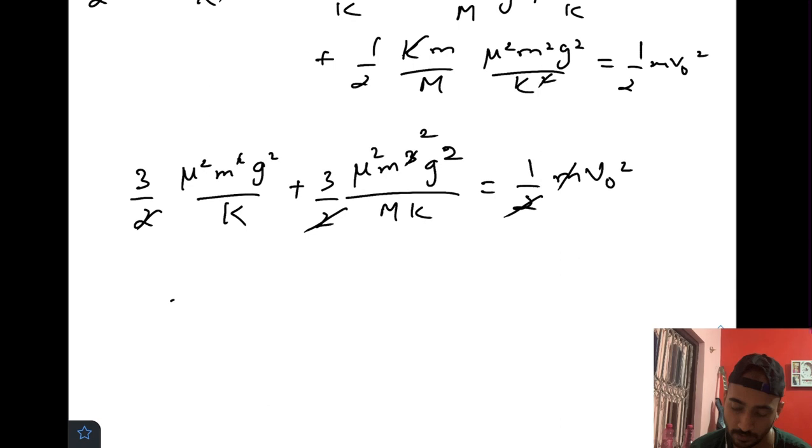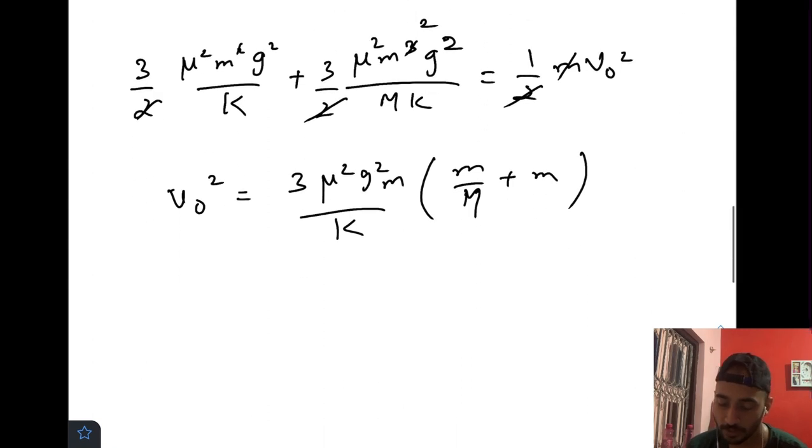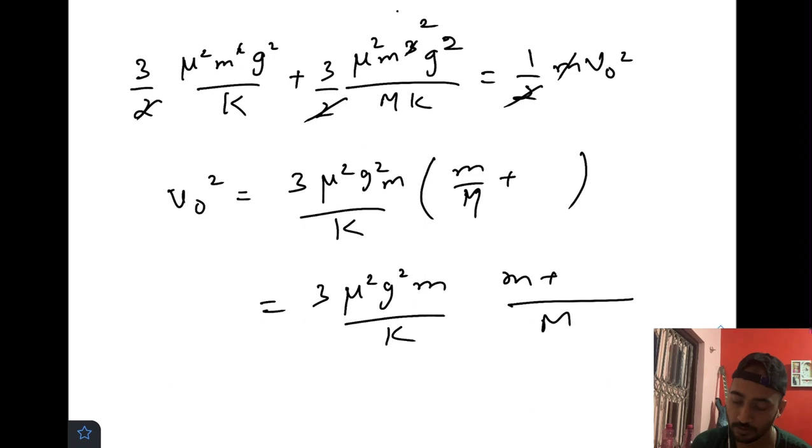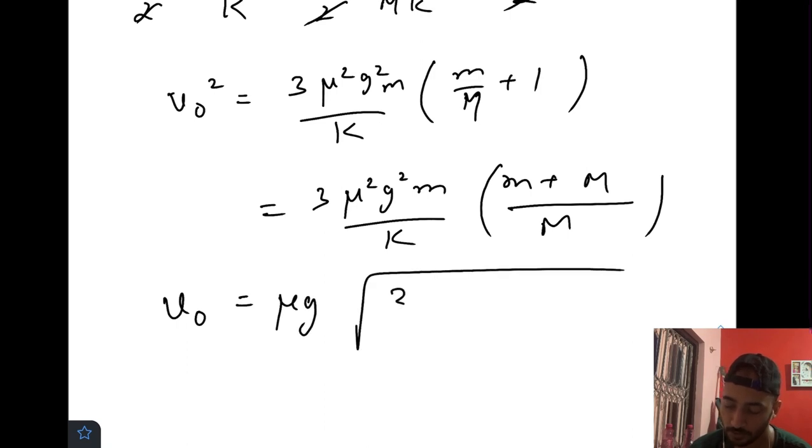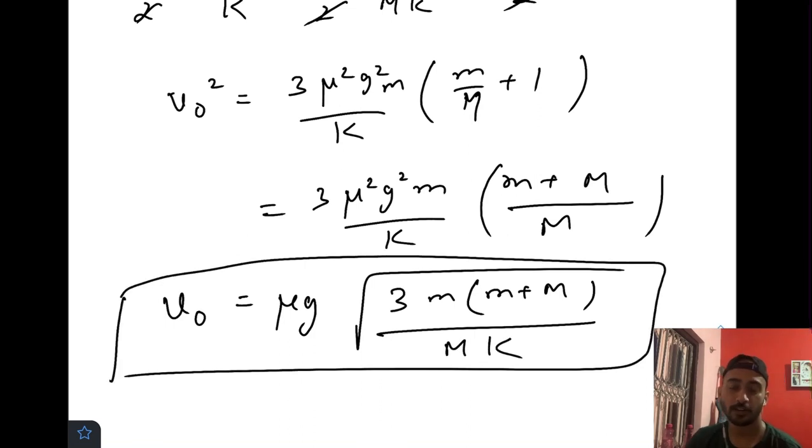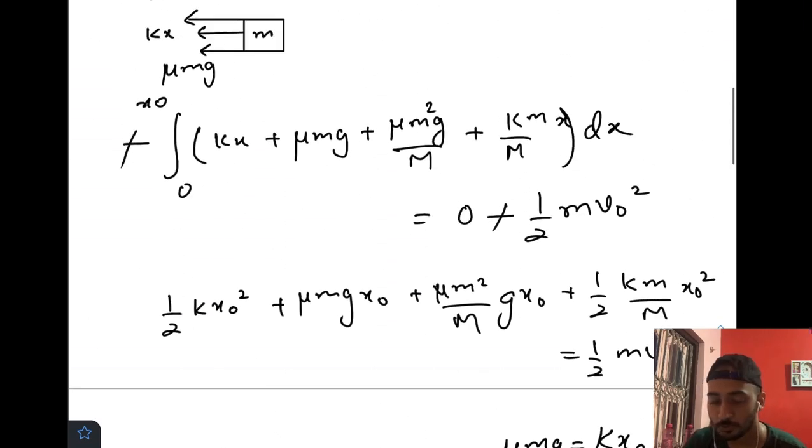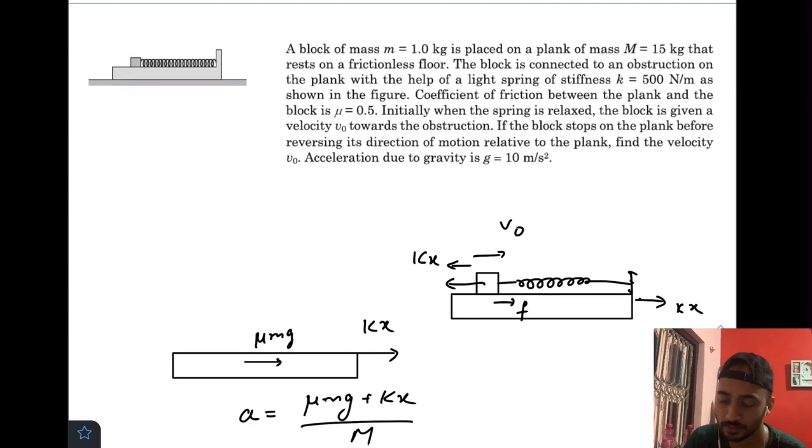So v₀² = 3μ²g²m/k × (m/M + 1). We can write v₀ = μg√[3m(m+M)/(Mk)]. This is our final answer. You can now just put down the values of the given variables and you will get your final answer, but I will keep it up to this part.